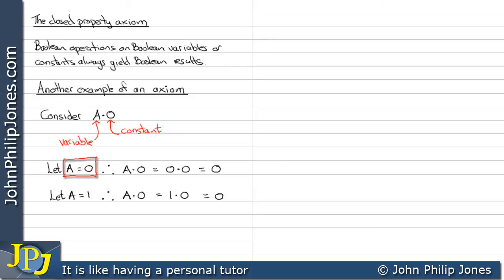When we make A a 0, we get a 0. When we make A a 1, we get a 0. Therefore, A and 0 always gives a 0.